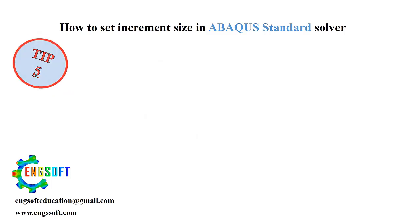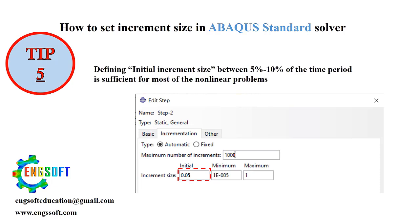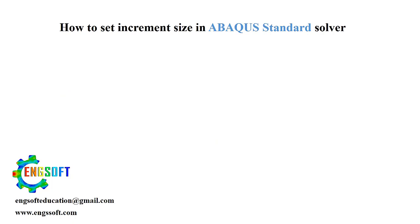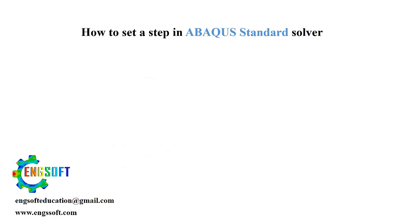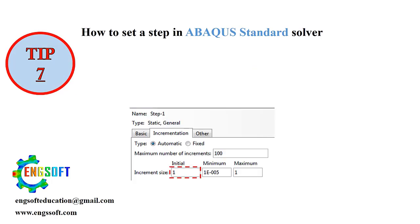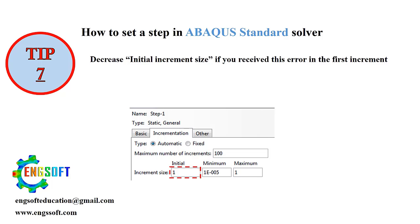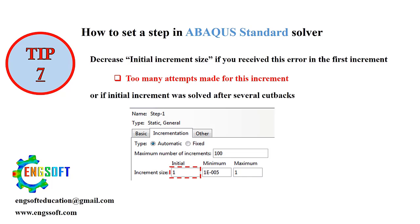Tip 5 — Initial increment size: For most non-linear problems, setting the initial increment size to 5% to 10% of the time period works well. Tip 6 — Larger initial increments: For slightly non-linear problems, go for larger initial increments to save time on computations. Tip 7 — Smaller initial increments: If you encounter specific errors, or if the first increment requires multiple cutbacks, reduce the initial increment size.